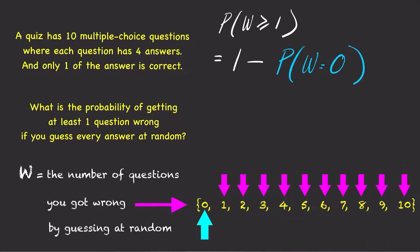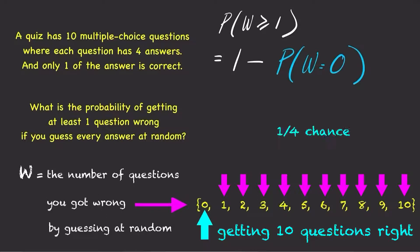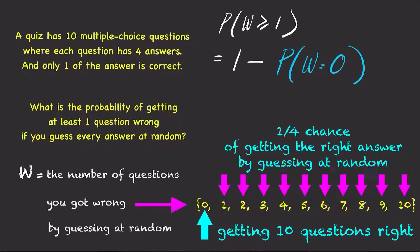And w equals 0 means getting no questions wrong. In other words, you got the correct answer for all 10 questions by guessing at random. Note that for each question, you have a 1 out of 4 chance of getting the correct answer by guessing at random.